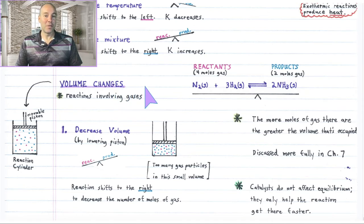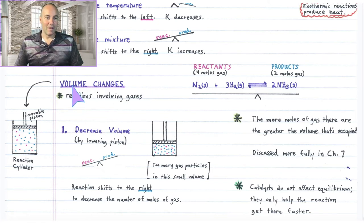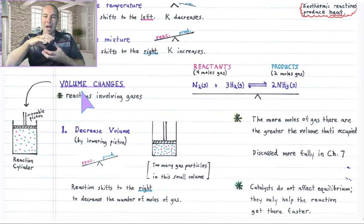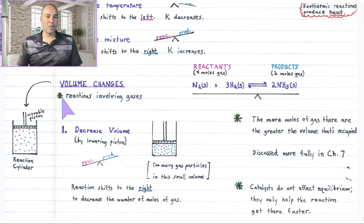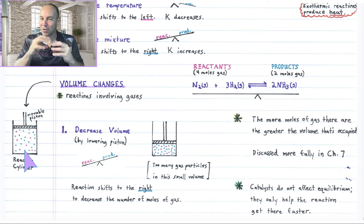For the last disturbance category: volume changes. Your textbook discusses this but calls it pressure changes. We're going to discuss it a little bit differently than how it's covered in the text, but we're going through essentially the same material. When you have a reaction which occurs in the gas phase, changing the volume of the reaction mixture is possible, and that can distort the equilibrium as well. So volume changes really only affect gas phase reactions. Imagine the reaction is taking place inside of a cylinder with a movable piston — you can squeeze the gases into a smaller volume or increase the volume, and when that changes, you change the pressure of the system as well.